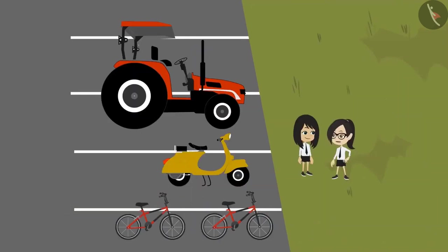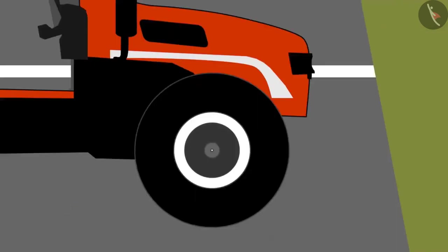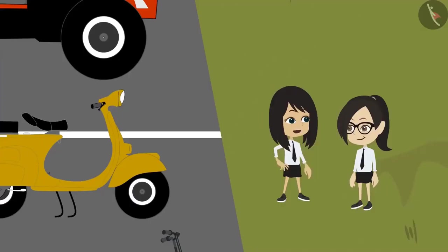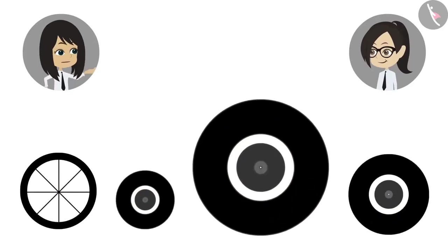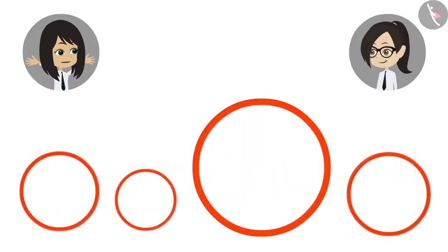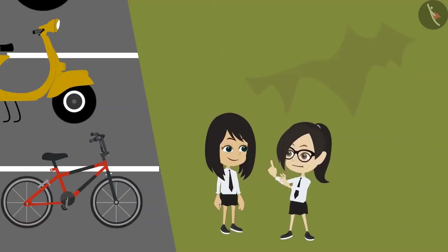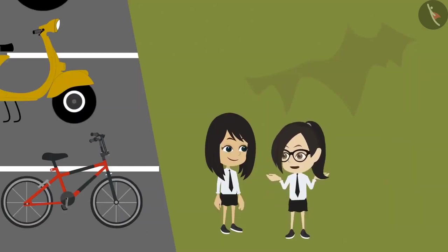Yes, but the tractor also has two types of tires and the front tire is smaller than the tire at the rear. We saw four different sizes of tires but all are in the shape of a circle. Yes, you are right, Neha. All are circular. But how will we know how big or small they are from each other?